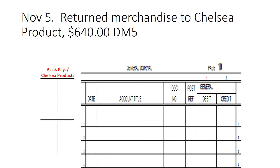We take our two accounts. We purchased merchandise on account — we know that because it has a debit memorandum. We use a new account called purchase returns and allowances. The accounts payable account is going down; we do not owe as much money because we're returning the merchandise. Because of that, we debit accounts payable slash Chelsea Products, and purchase returns and allowances is going to be a credit.